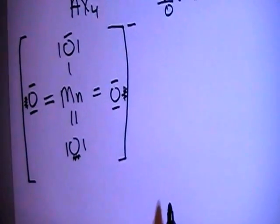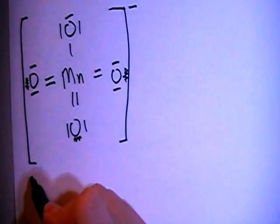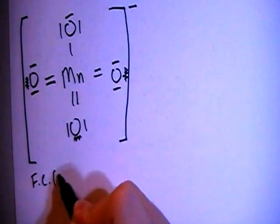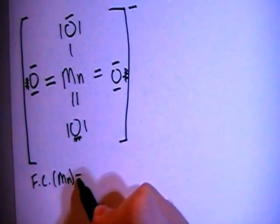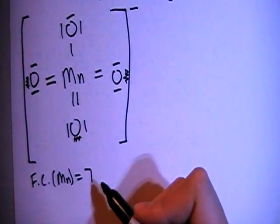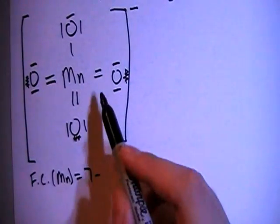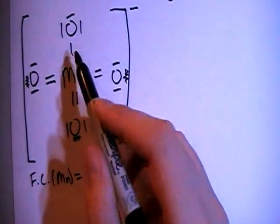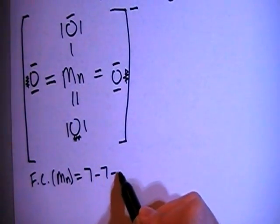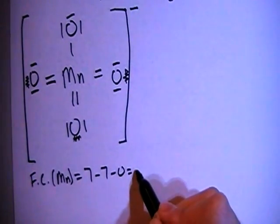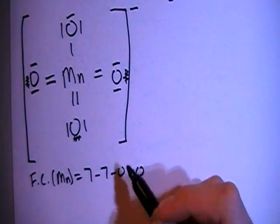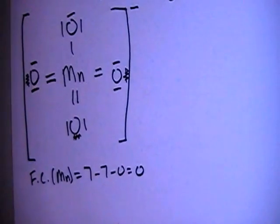So let's go ahead and check the formal charge now. The formal charge on the manganese in the center is going to be 7 valence brought in minus 1, 2, 3, 4, 5, 6, 7 bonds minus 0 non-bonding for a formal charge of 0. As you can see before with 4 single bonds that would have been plus 3 and you don't want that.